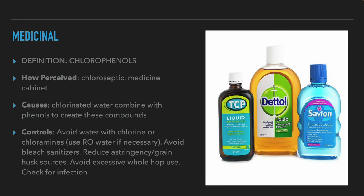The next aroma and flavor originate from the yeast — this is the aroma of chlorophenols. We perceive chlorophenols as a disinfectant or drug cabinet. The source of these compounds is water that contains chlorine or chloramine. The chlorine and chloramine react with phenols that the yeast produce to form chlorophenols. To avoid these compounds in the beer, the brewers should make sure that there are no chlorine or chloramine in the brewing water, and use carbon filters and/or reverse osmosis to avoid them. Also, avoid using chlorine-based disinfectants, avoid polyphenol extraction from the malt and hops, and make sure that there is no infection.